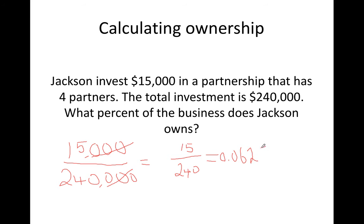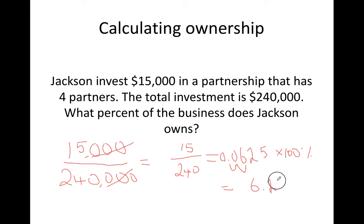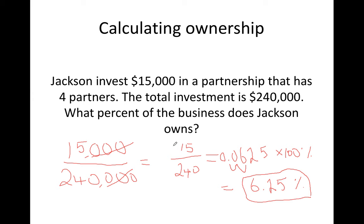Now to convert this into a percentage, you multiply by 100. You move the decimal by two places and that gives you 6.25 percent. So Jackson owns 6.25% of the company. If you have any questions regarding this, please let me know. Let's move on to the next question.